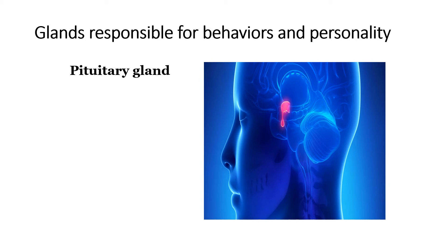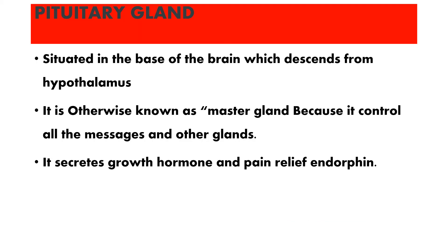The first ductless gland is the pituitary gland, situated at the base of the brain, descending from the hypothalamus. It is otherwise known as the master gland because it controls all messages and regulates other glands. It secretes growth hormone and pain-relief endorphins, playing a major role in controlling our behavior.